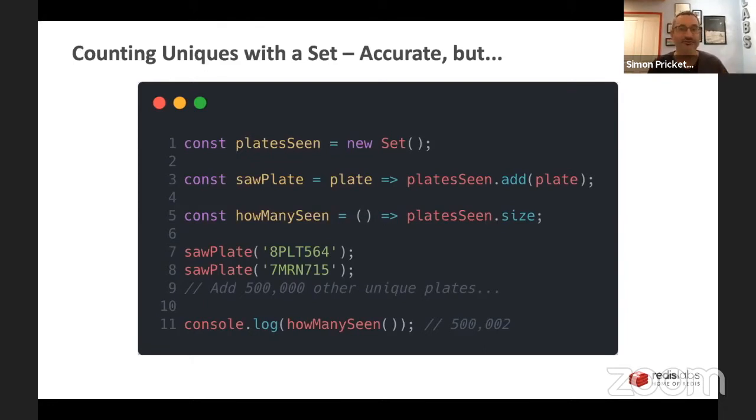And I can call those two functions. So I add a couple of license plates there at lines seven and eight. And then I could add like maybe a half million other license plates. And then I can ask it, how many have you seen? And it's going to say 500,002. And this is perfect, right? There's no problem with this. We added 500,002 different things. And we've remembered that we counted 500,002 different things. This is exactly what we want to do.